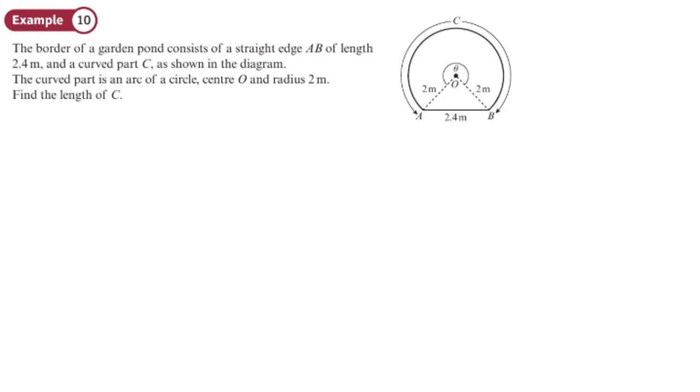So what we've got here is this garden pond that has a straight edge here and this curved bit around here. We want to find the length of that curved bit, which means finding this angle. And to find that angle, we need to find this one here.